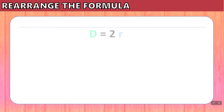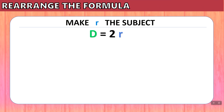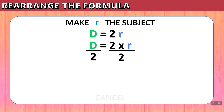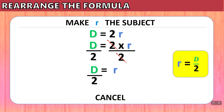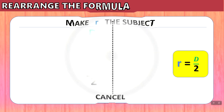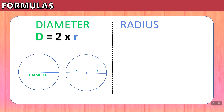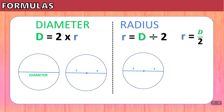So let's take a look at rearranging the formula. D equals 2R — we want to make R the subject so that we can find out what the formula is for the radius. D equals 2R really means D equals 2 times R. 2R with no sign in the middle really means multiply, and we undo multiplication with division, so we will divide both sides by 2. This 2 cancels with that 2 and leaves us with D over 2 equals R, or R equals D over 2. So we have the diameter formula D equals 2 times R — if we are given a radius, we can find the diameter by multiplying it by 2. And the radius formula R equals D divided by 2 — if we're given the diameter, we can divide by 2 to find the radius.